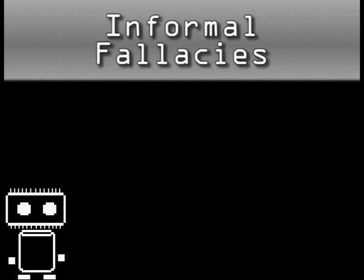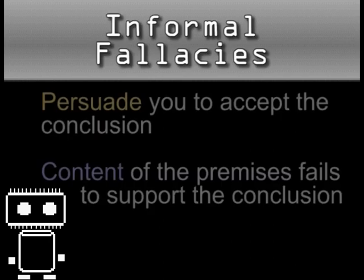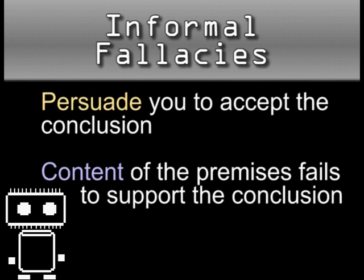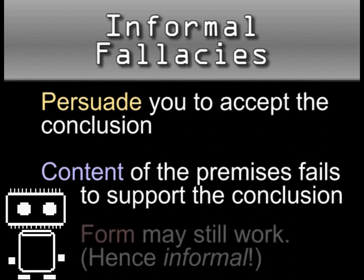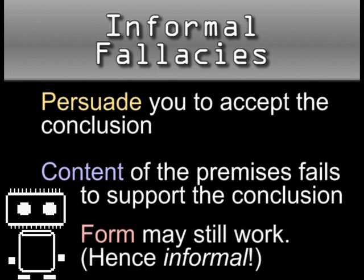This reliance on the psychological persuasiveness of a statement is a hallmark feature of informal fallacies, which are informal because the truthfulness of the conclusion's content can't be derived from the truthfulness of the content of the premises. Still, the arguments may be perfectly valid, like my food-is-coffee syllogism. Here are some examples of informal fallacies.